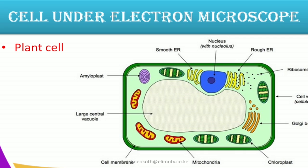First, let us start with the plant cell. The additional features that you are able to see include the endoplasmic reticulum — we have the rough and the smooth, and we're going to look at the difference and why each is called smooth or rough. We have ribosomes, we have the Golgi bodies, we have the mitochondrion — among just a few things that you observe when you look at the electron microscope.